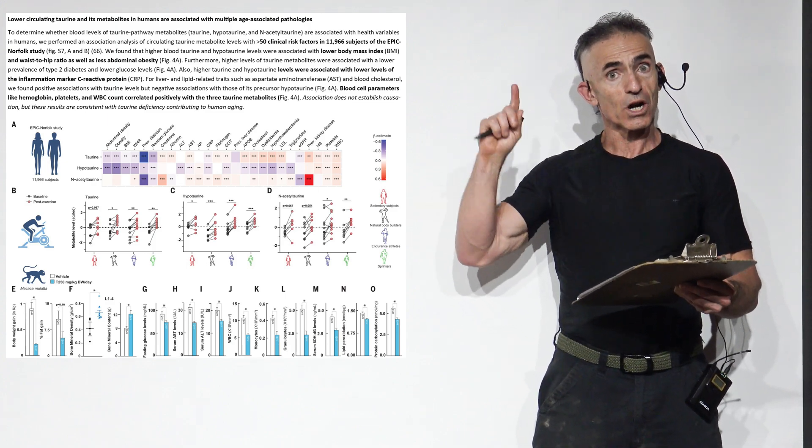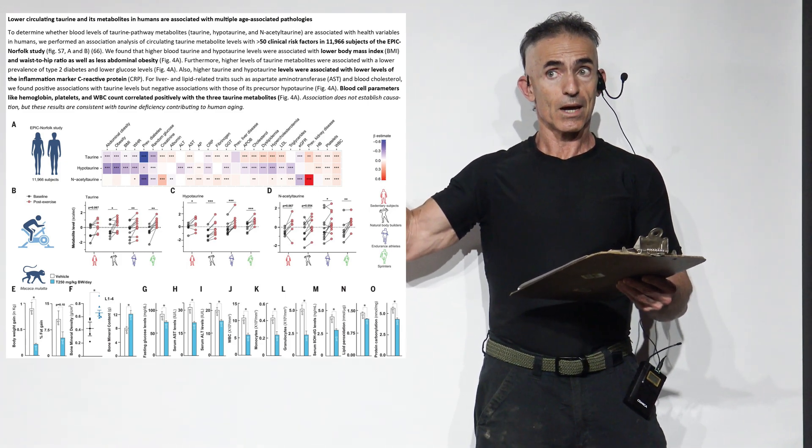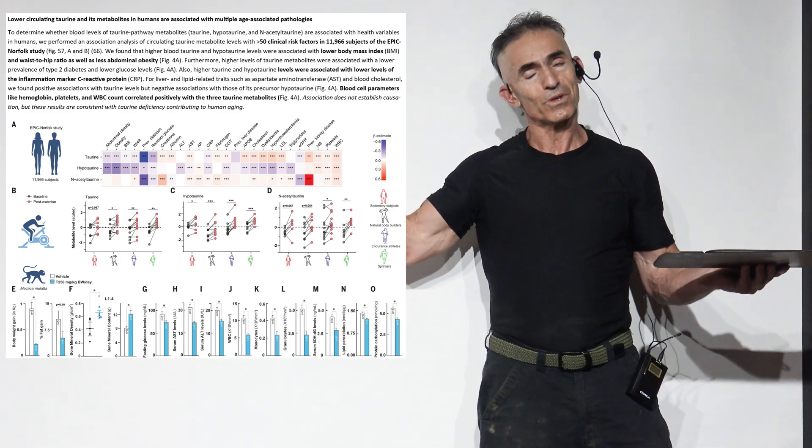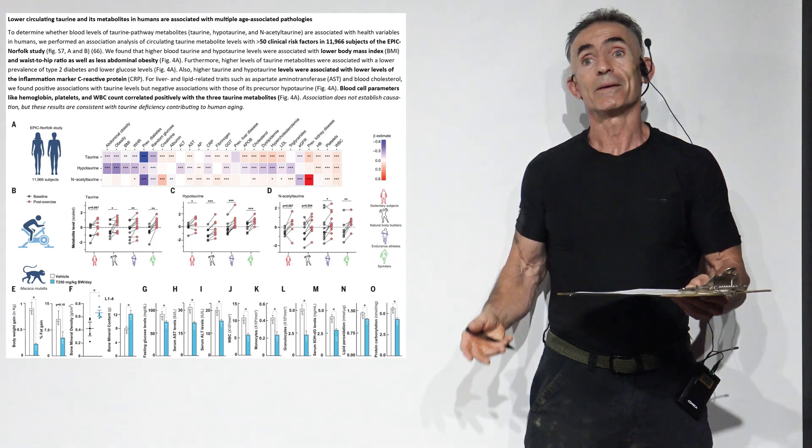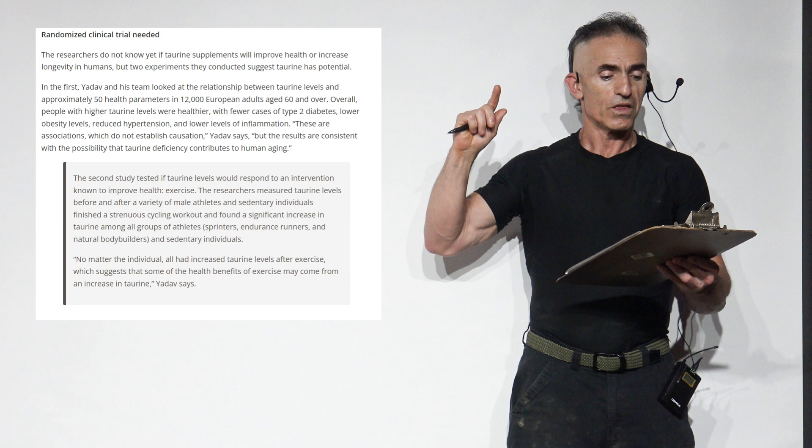Again, taurine deficiency. Remember the first chart we brought up? As it begins to go down, these age-related abnormalities, or as people mature, it can become more prevalent in association with lower taurine levels.